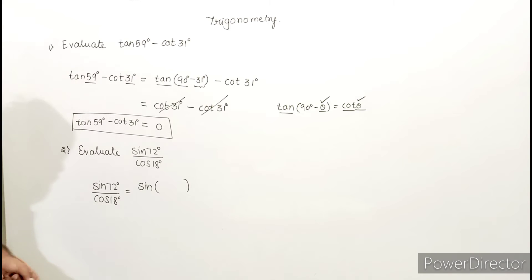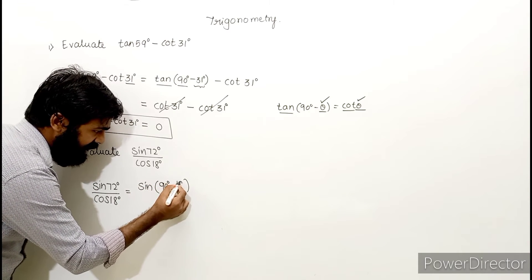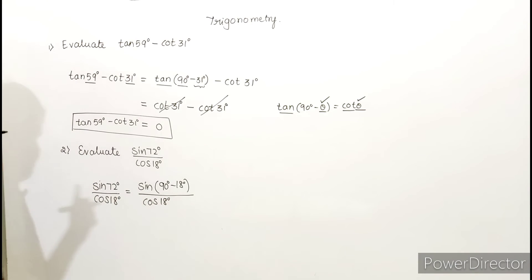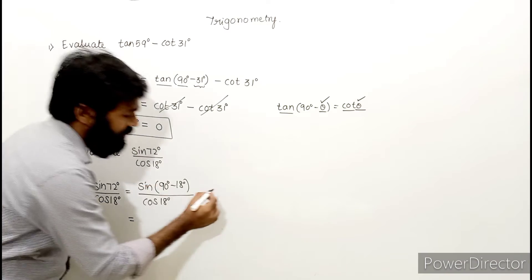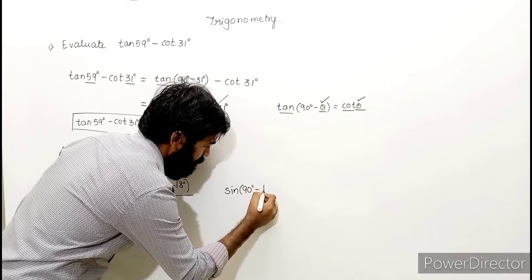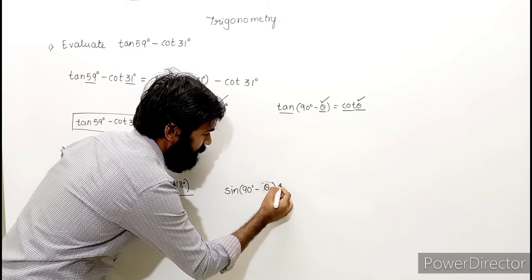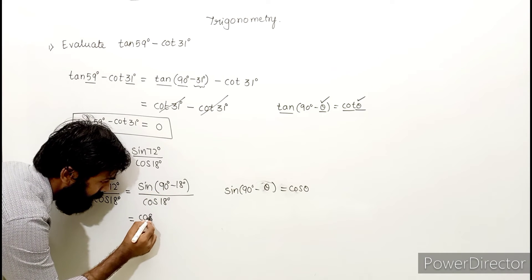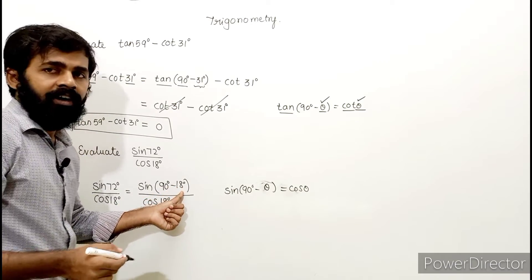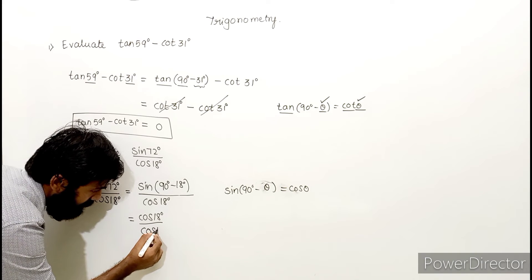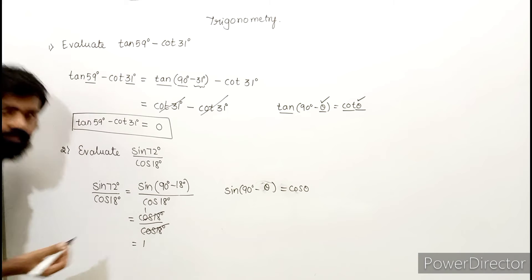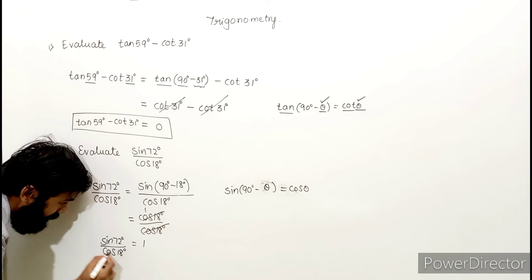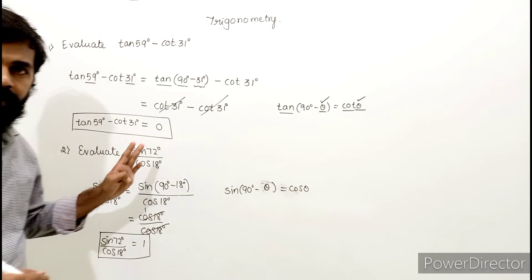Notice 72 plus 18 equals 90, so we can write 72 as 90 minus 18. Using the formula sin(90 minus θ) equals cos θ, sin(90 minus 18) becomes cos 18 degrees. So we get cos 18 divided by cos 18, which cancels to give 1. Therefore sin 72 degrees divided by cos 18 degrees equals 1.